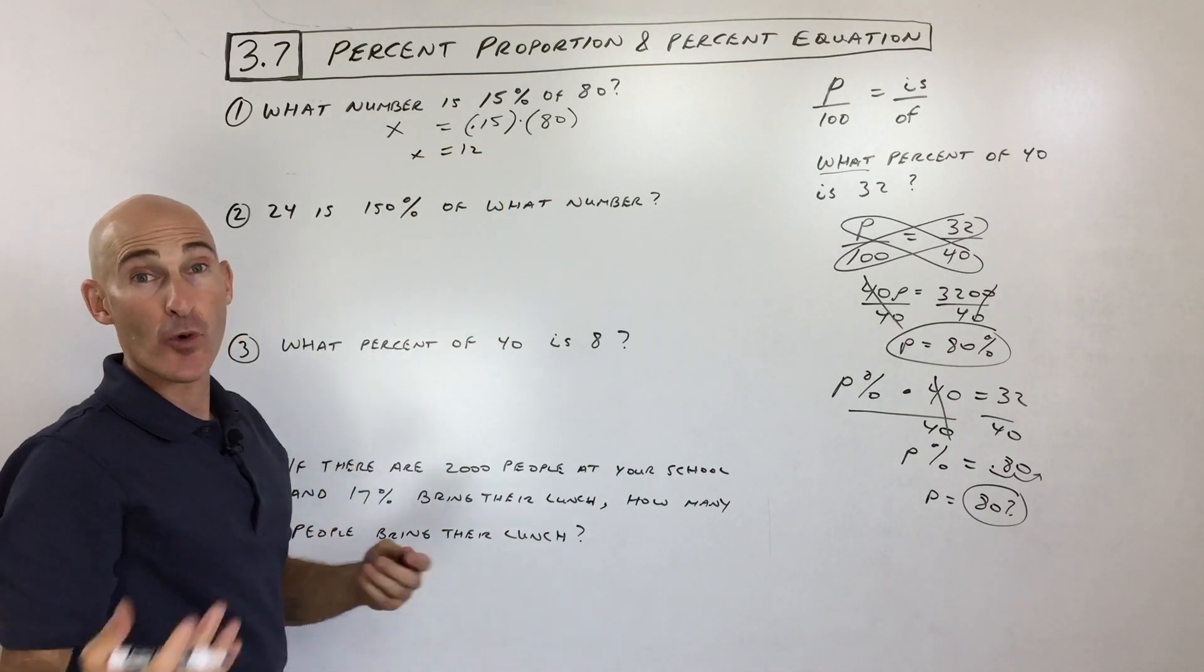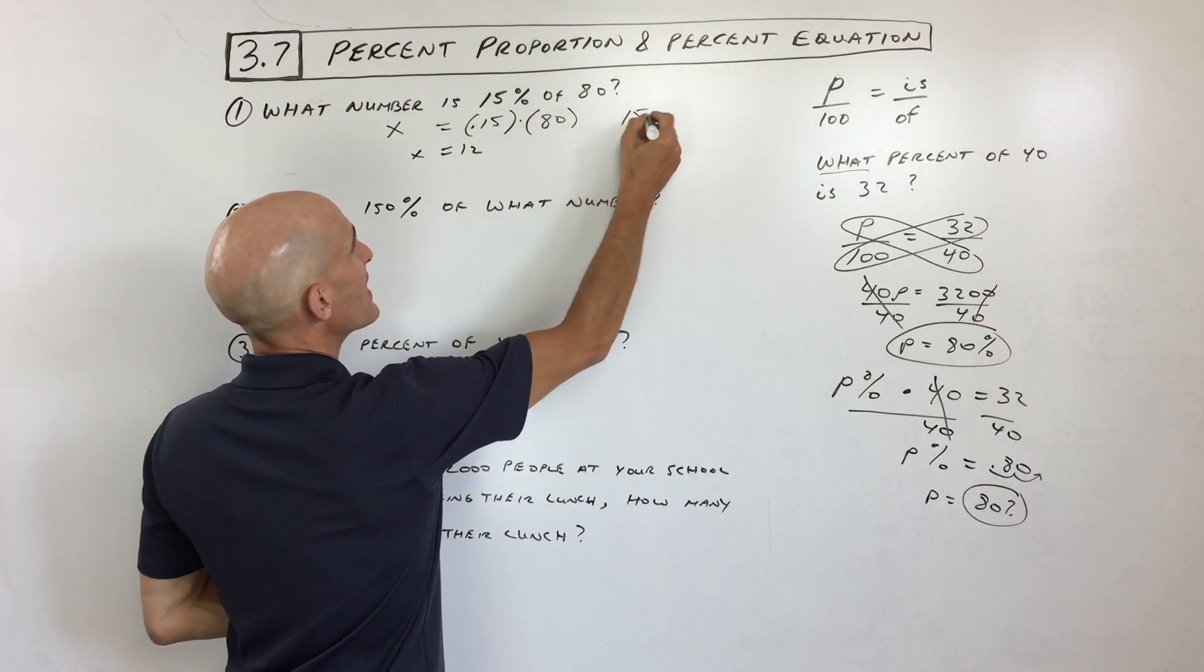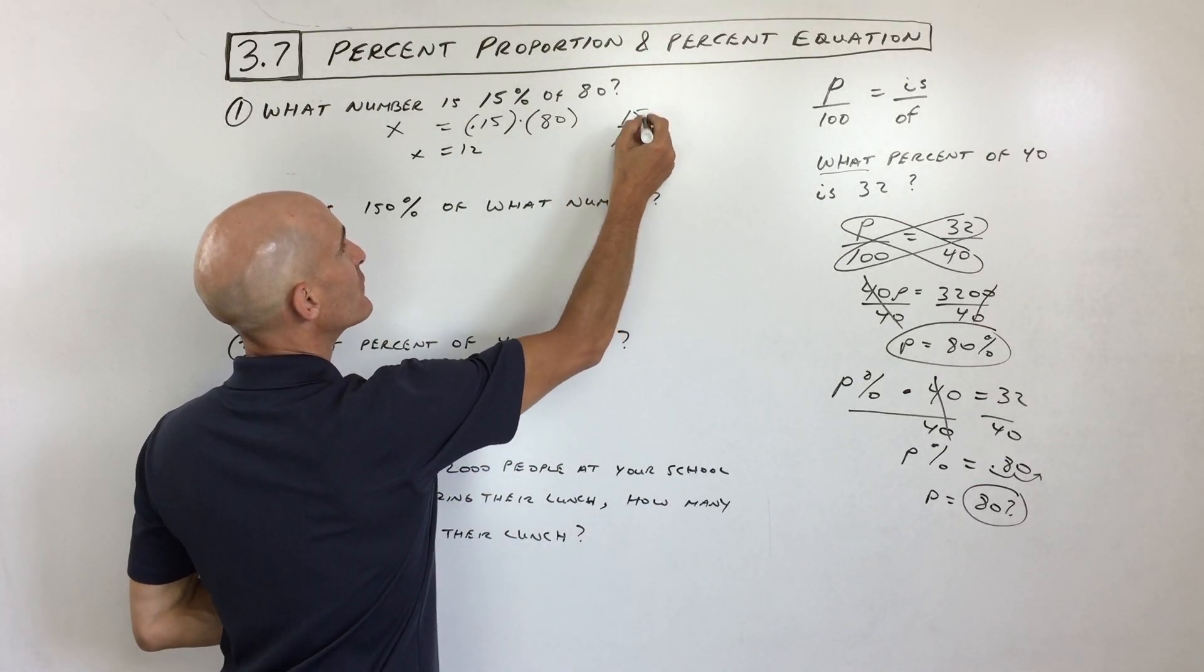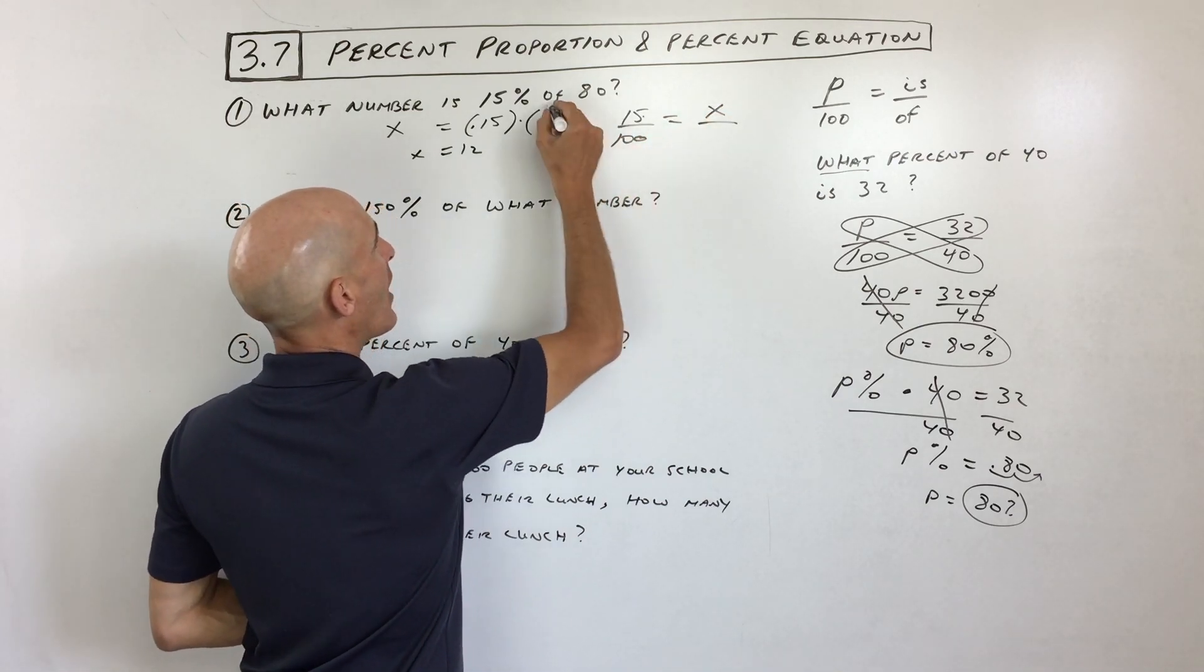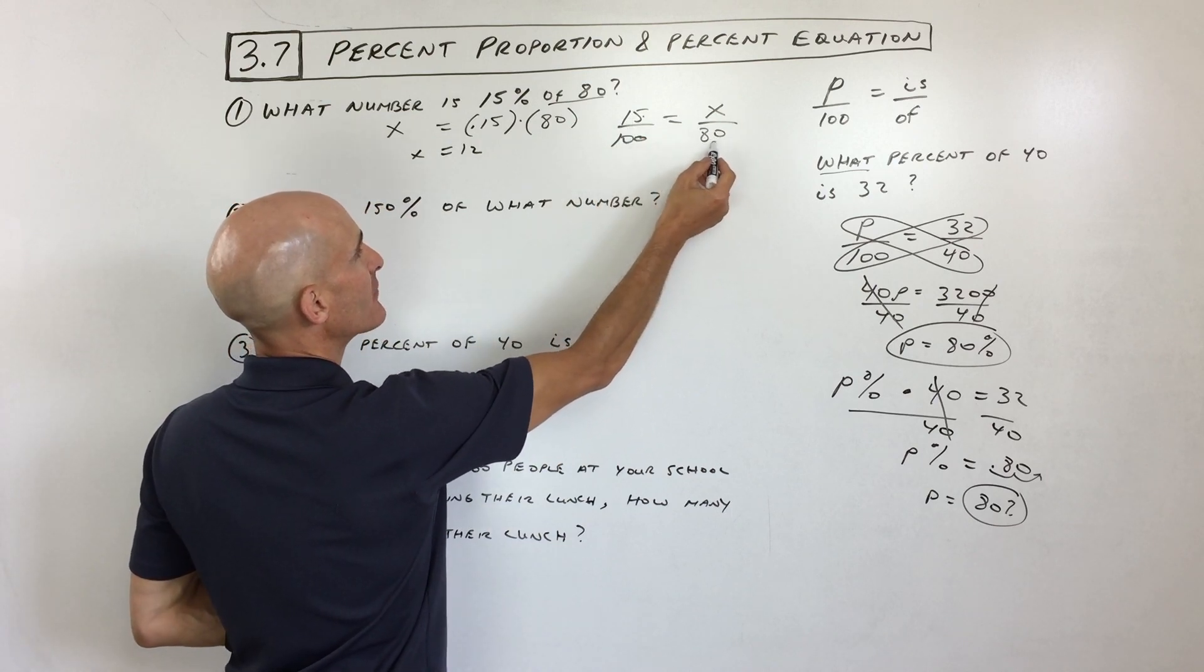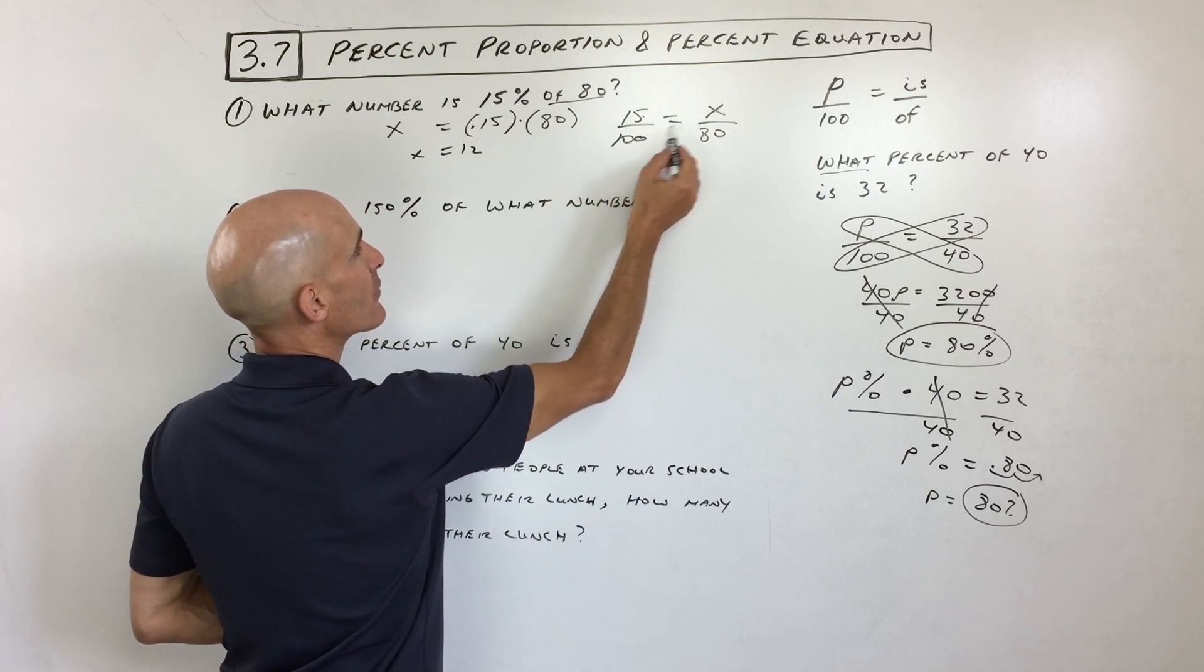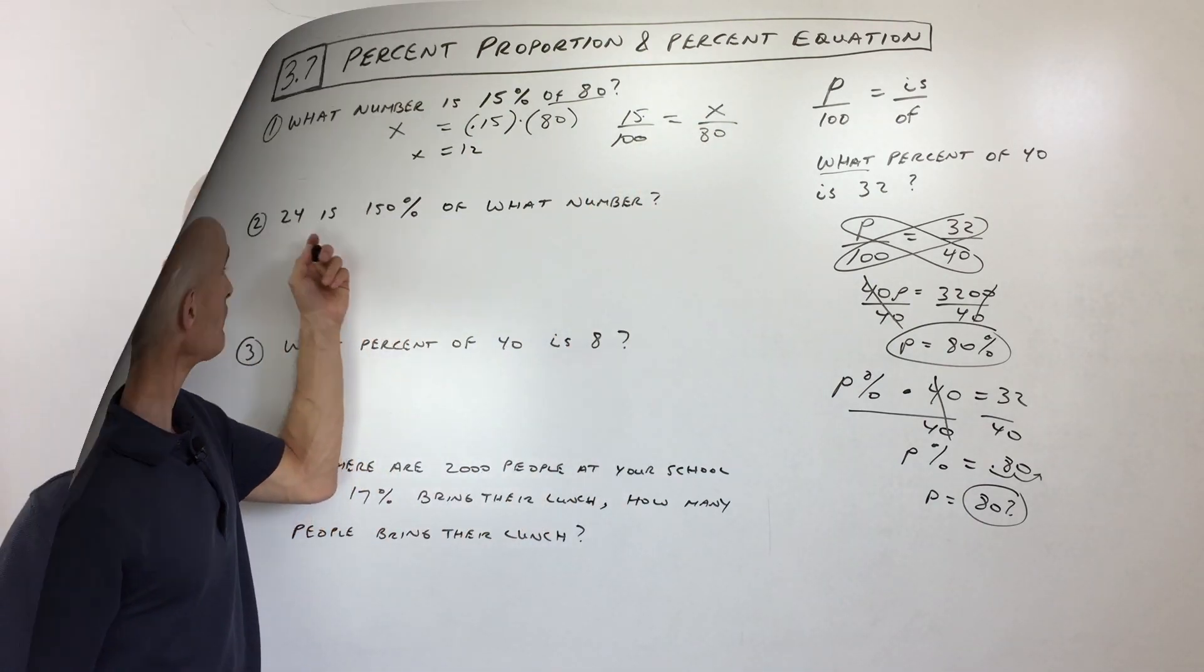Now, if you're wondering how would you do this as a proportion, right? So what number is 15%? So 15 parts out of 100. So 15%. Okay, what number is, so we don't know what the number is, out of, meaning that's the total, 80. So remember, 100% is the total, just like of 80. Out of 80 is the total. This is the part out of the whole, part out of the whole. We cross multiply, solve. We get the same answer, right? Okay, number two.